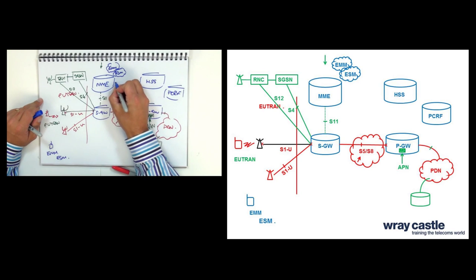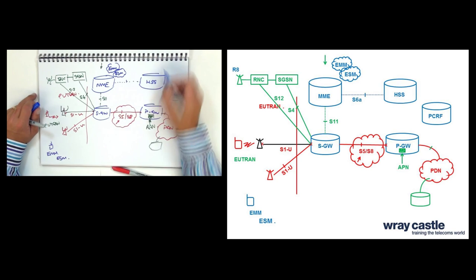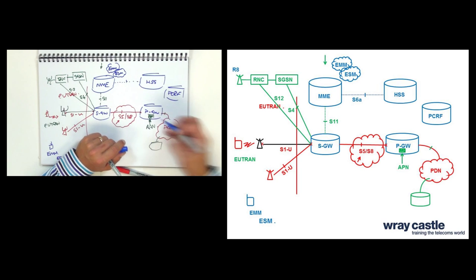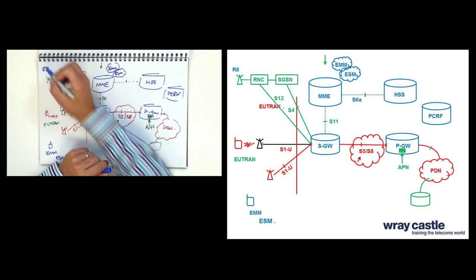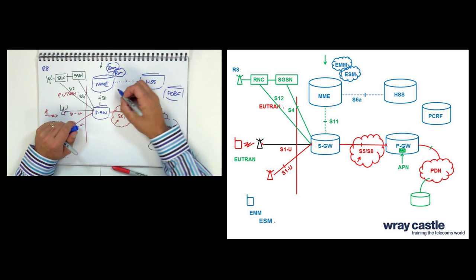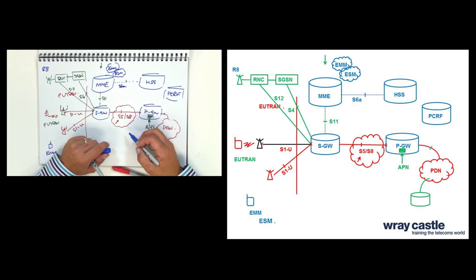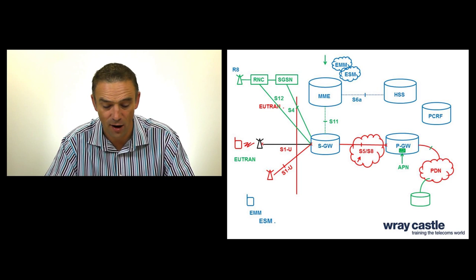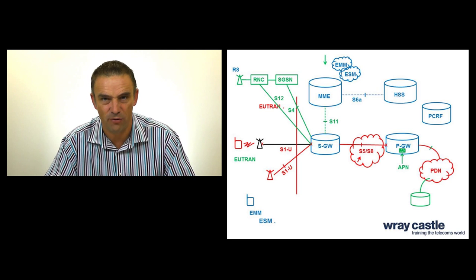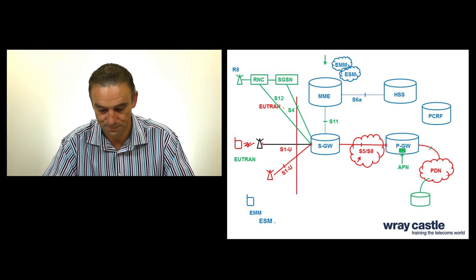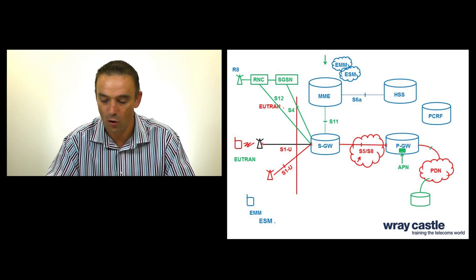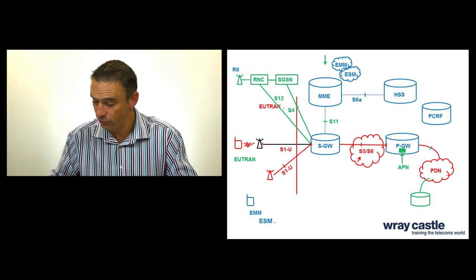So to access subscription information, we've now got the HSS. Again, the HSS was not new. It's not a Release 8 technology. That actually arrived in Release 4 as an evolution to the HLR. But Release 8 standards define an S6A interface between MME and HSS, based on the protocol diameter, to retrieve subscription information, to do location updates. So your HSS is now your permanent store of subscription information.